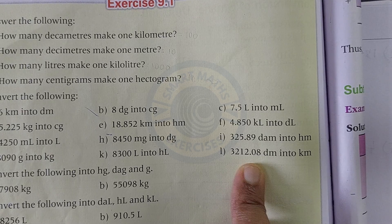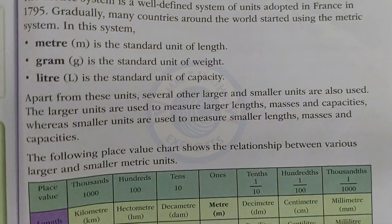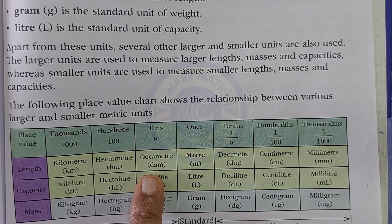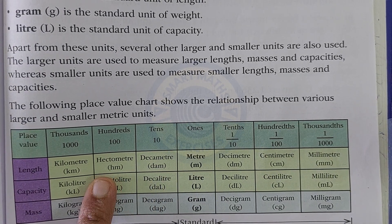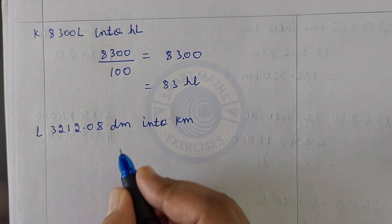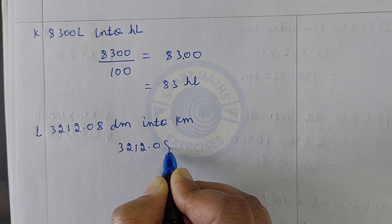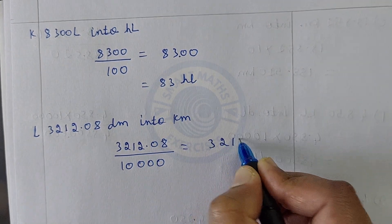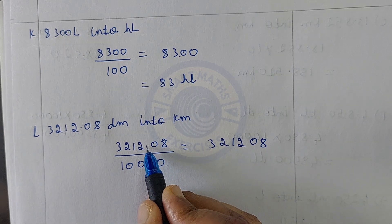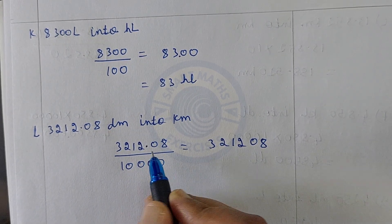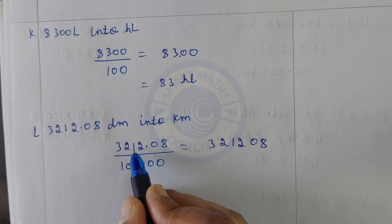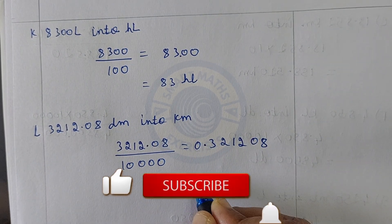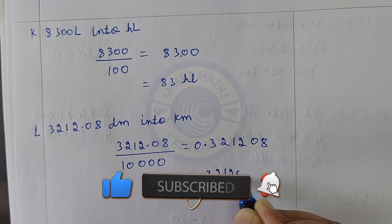Convert 3212.08 decimeters into kilometers. From decimeter to meter is 10, meter to decameter is 100, decameter to hectometer is 1000, hectometer to kilometer is 10,000. Divide 3212.08 by 10,000. Write 321208, shift the decimal four places to the left — there are no digits to the left, so add a leading zero: the answer is 0.321208 kilometers.